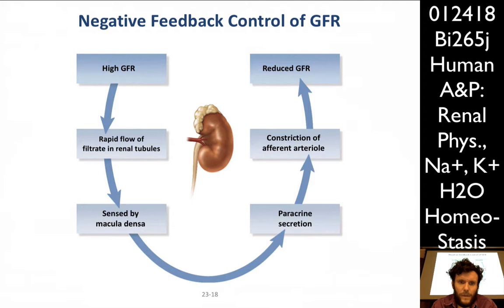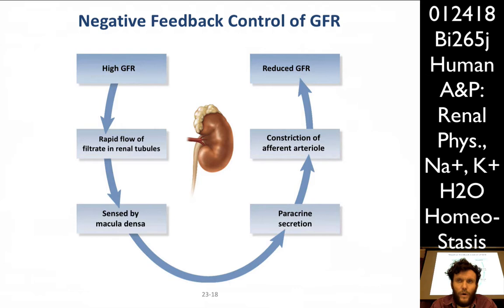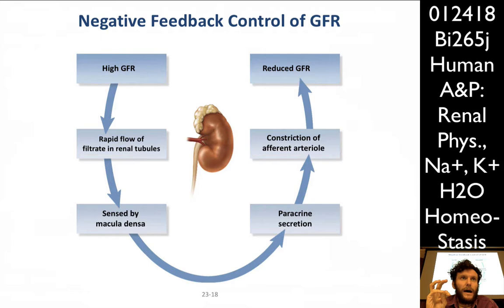On the other side of the feedback loop: if we have a high GFR, there is a rapid flow of filtrate into the renal tubules and we're producing a lot of fluid. In this case, the macula densa at the juxtaglomerular complex will sense that and produce paracrine secretions — this is the autoregulation, the in-situ regulation — which will constrict the afferent arteriole, turning the nozzle down on the hose, pushing less fluid in. This then brings down the glomerular filtration rate.